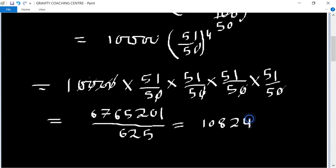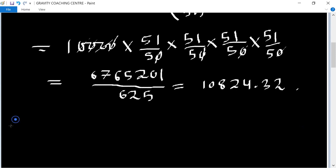This is the amount. Therefore, compound interest using the formula CI = A - P: